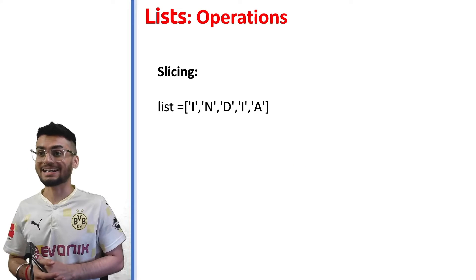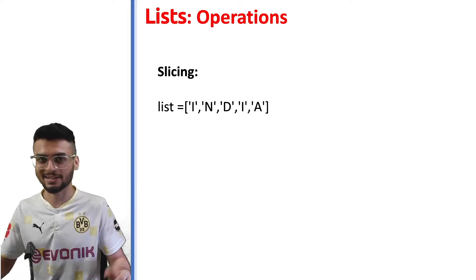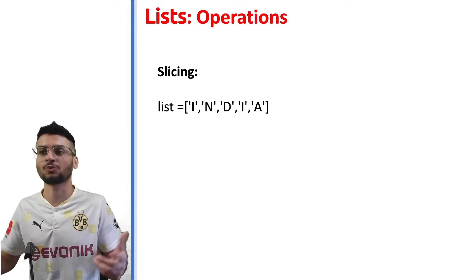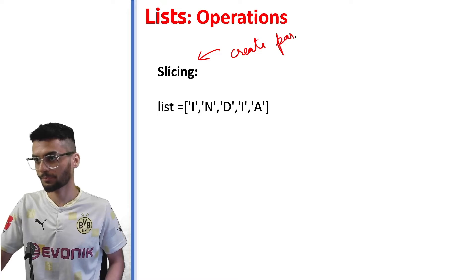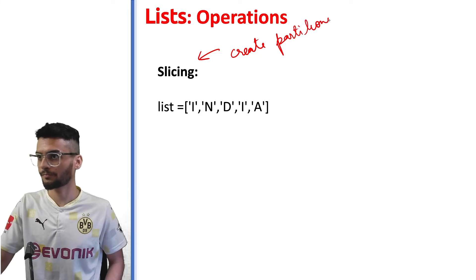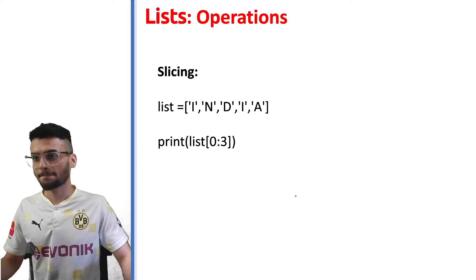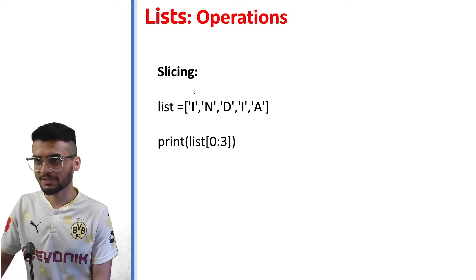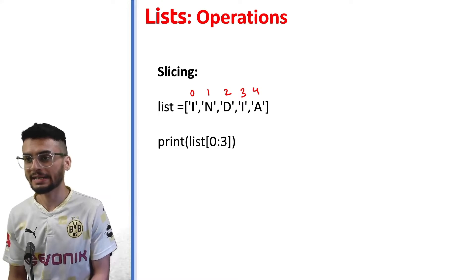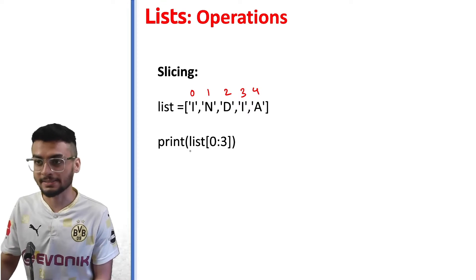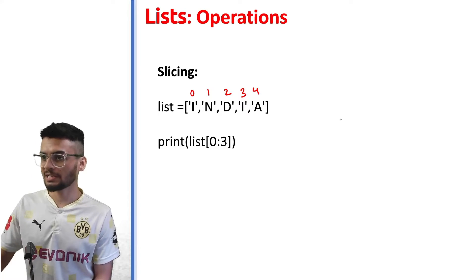Another operation which you can do with list is slicing. Now slicing, as the name suggests - if you have any fruit, before you eat you might cut it, right? So that you can divide into two parts, maybe three parts or four. Similarly in Python, the slicing is used to create partitions. These partitions can be of n numbers. Let's look at a few examples. Before we start, let's just write the index first. Now what I'm trying to print is list from zero till three. So let me tell you how this function works.